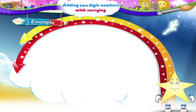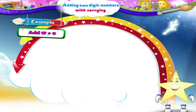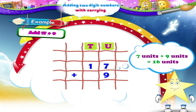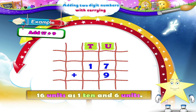Take a look at this example: add seventeen plus nine. First, let us arrange the numbers properly in the tens and units place. Write one in the tens place and seven in the units place. Next write nine below seven in the units place. Let us now add the digits in the units place. Seven units plus nine units equals sixteen units. Can we write sixteen in the units place of the answer? No, so we write sixteen units as one ten and six units. Write six in the units place of the answer.